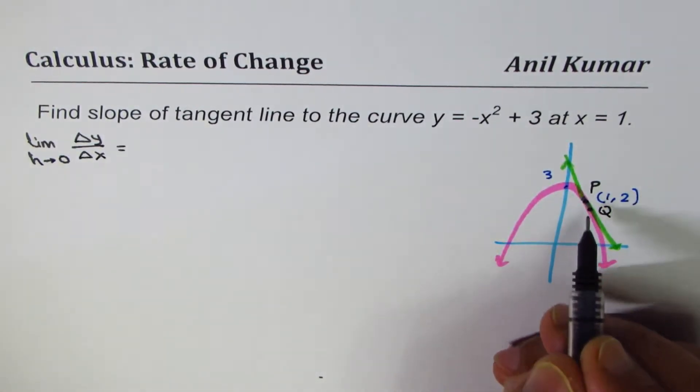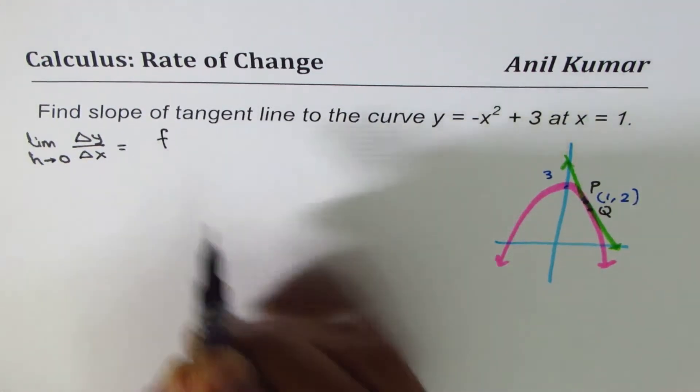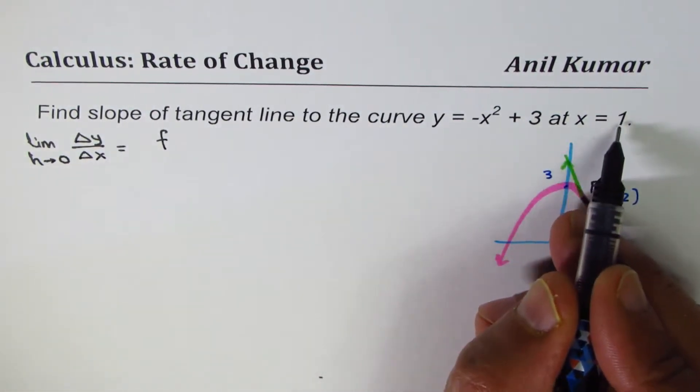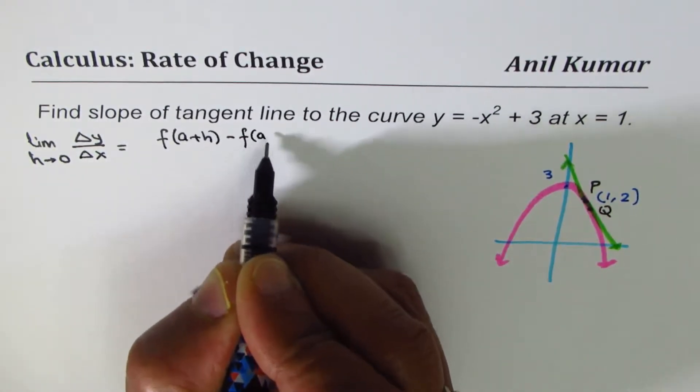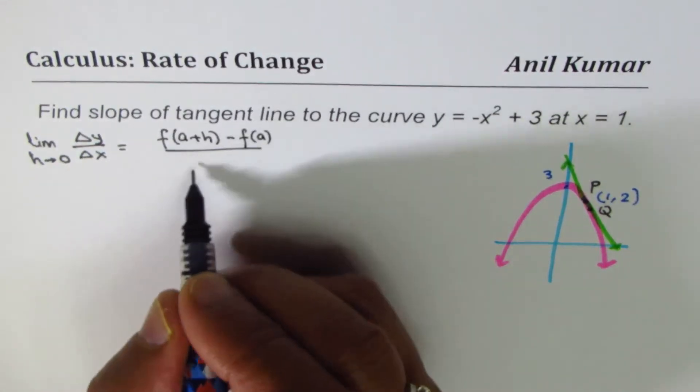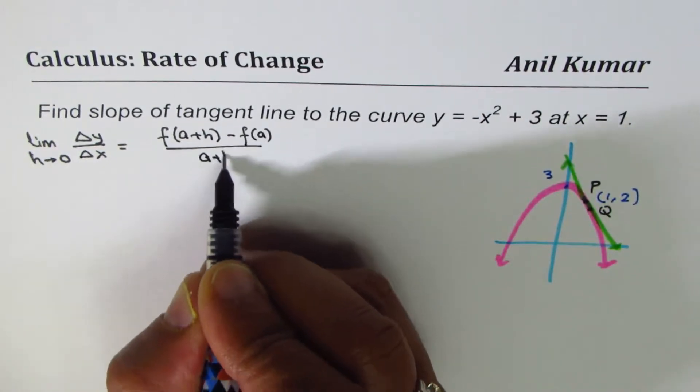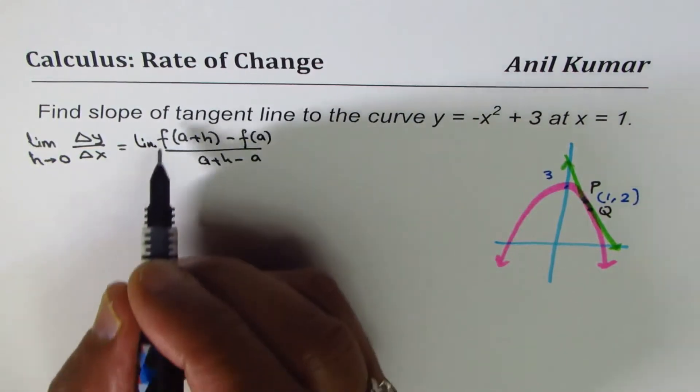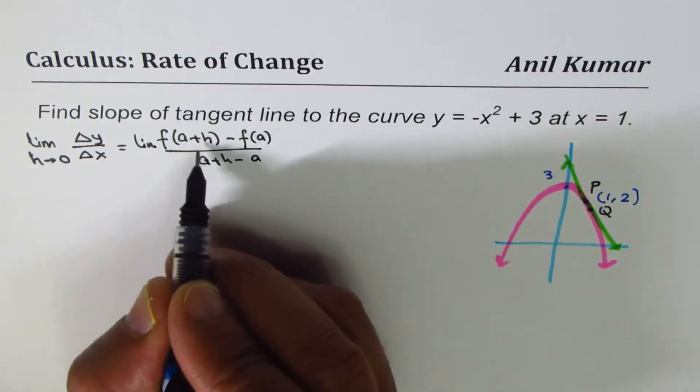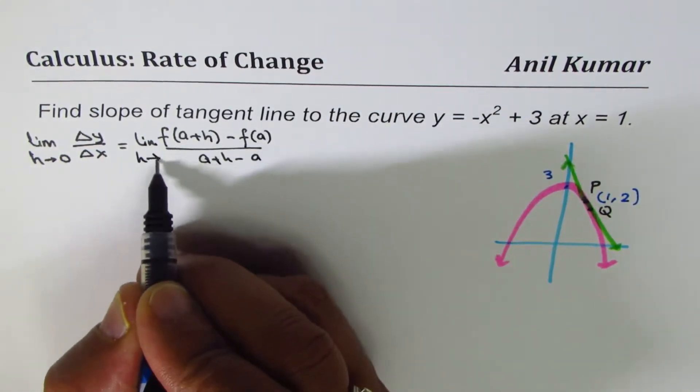So the change of y value is basically f of the point given to us which is 1. So the formula, let me write that first, [f(a+h) - f(a)] / [(a+h) - a]. And we write limit, so it's a convention, which says the two points are very close, h approaches 0.